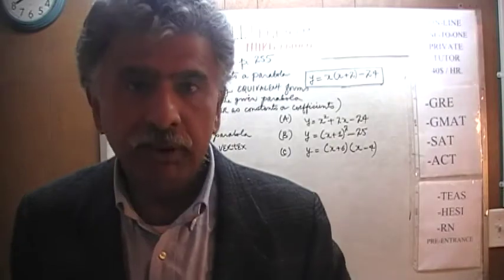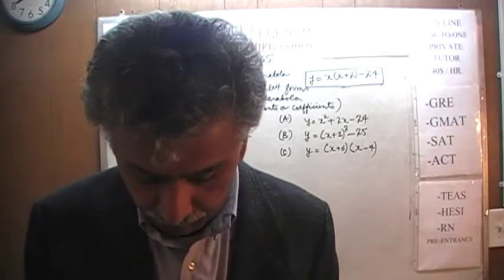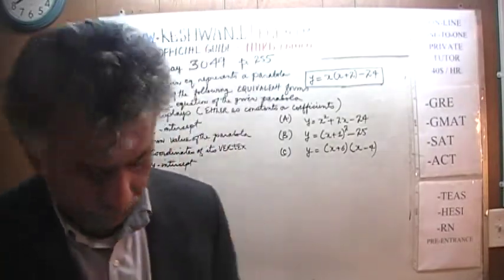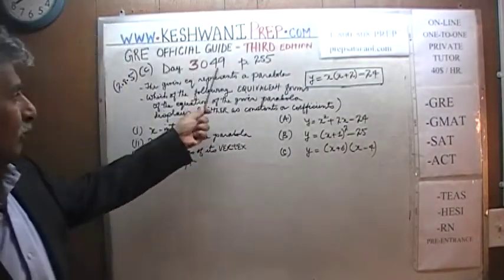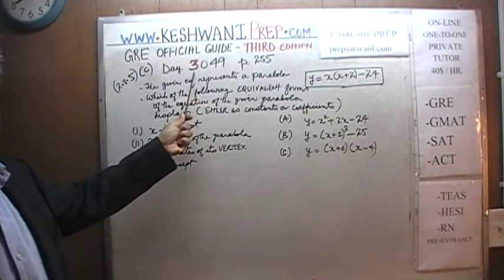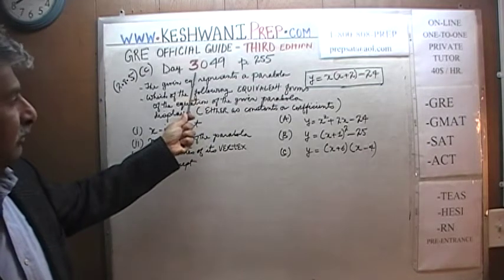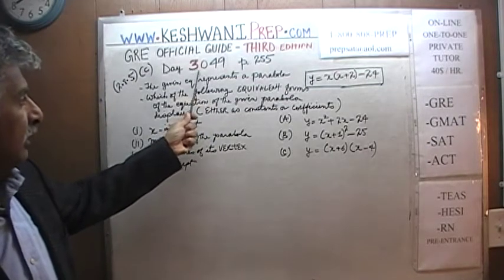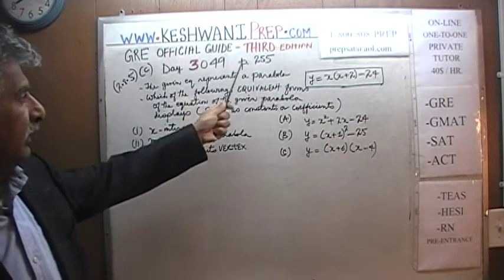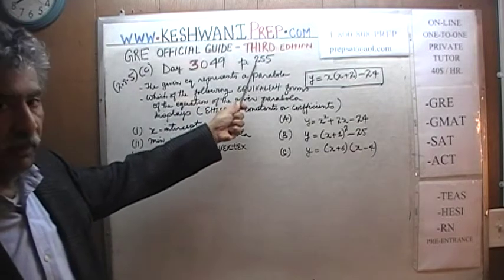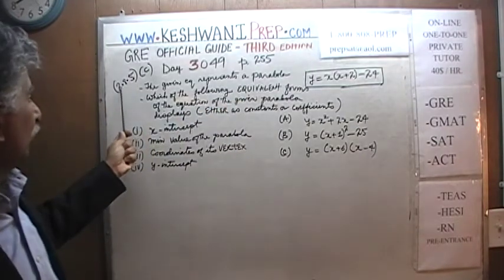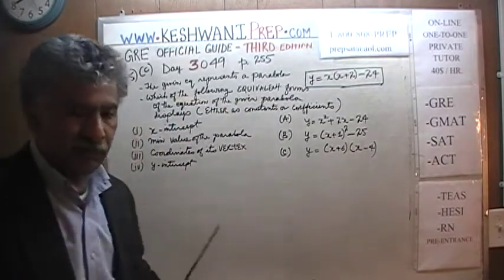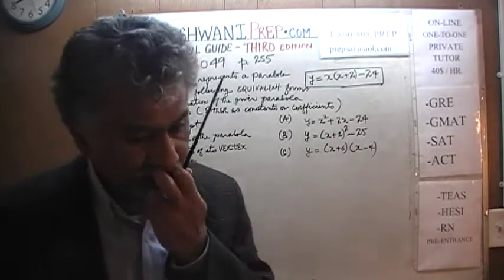Today is our lesson number 49, day number 3049. The 3 represents the fact that we are in the third edition, day 49. We are on page number 255, problem 2.8.5.